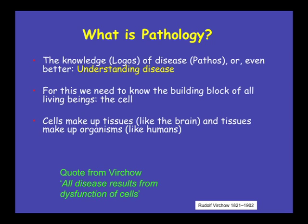I like this quote from Rudolf Virchow in the 1800s — around 1820 — where he said: all diseases result from dysfunction of cells. Now I'm going to show you some pictures of what the cells look like in the brain and also the tissues.